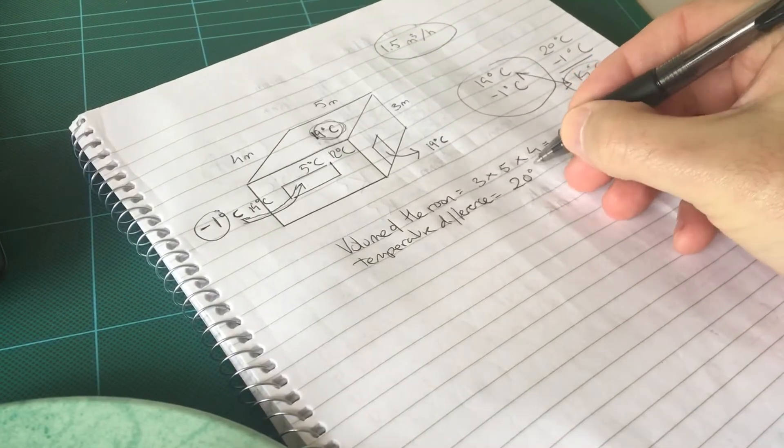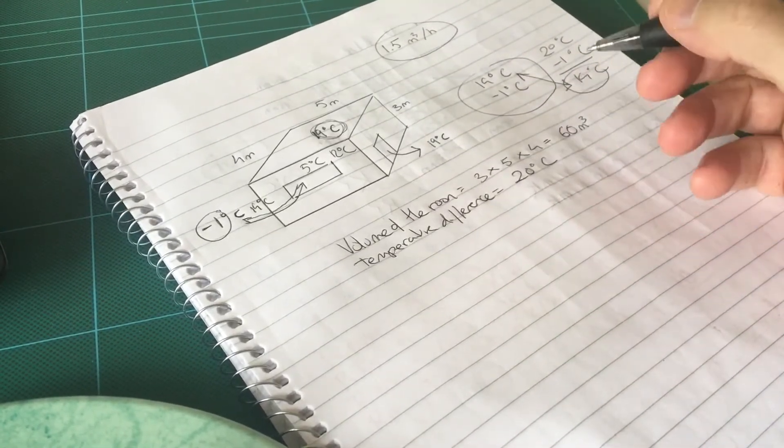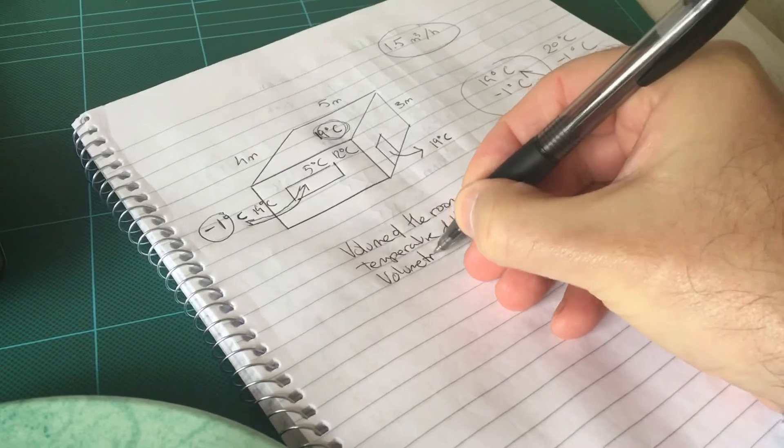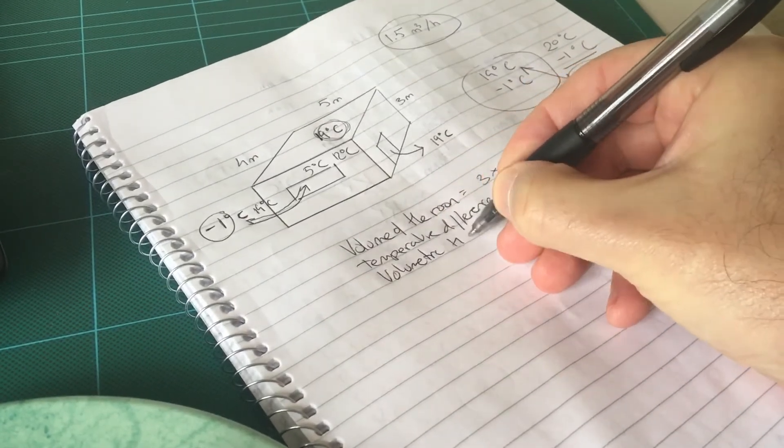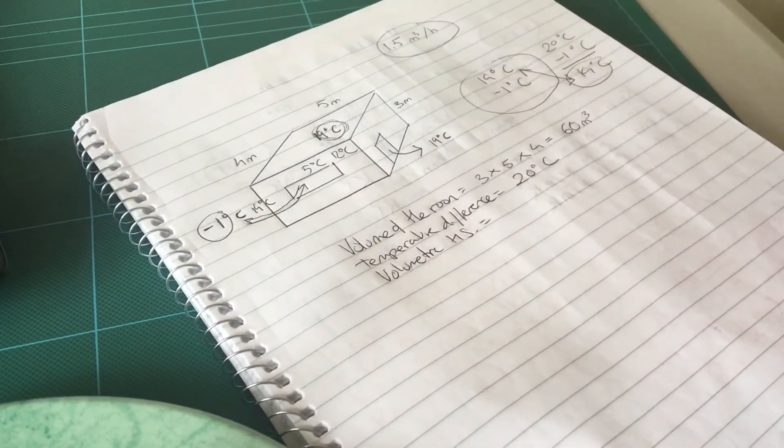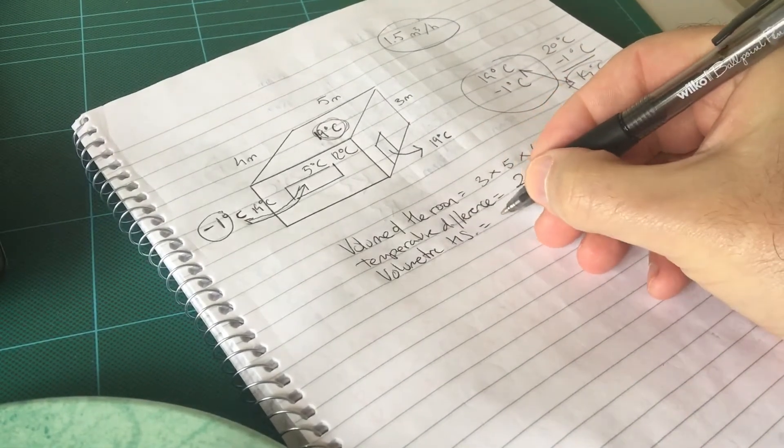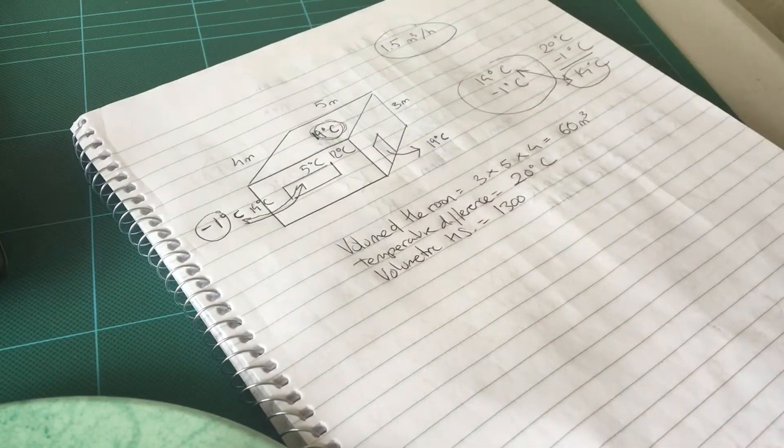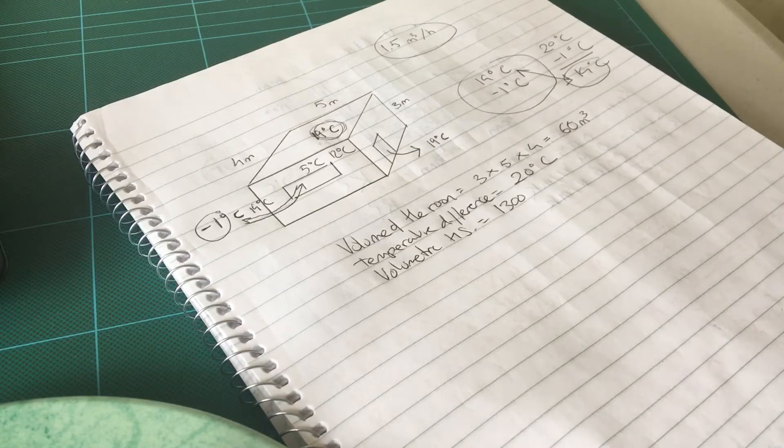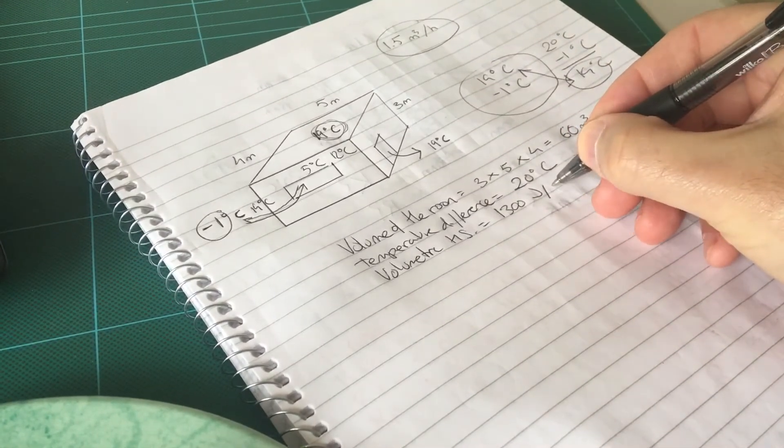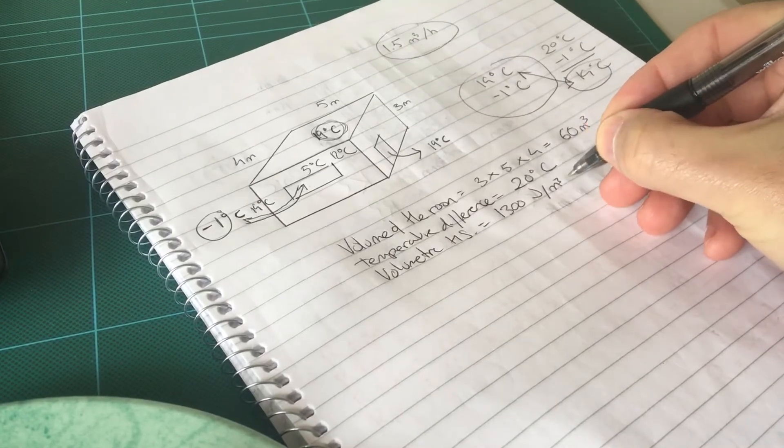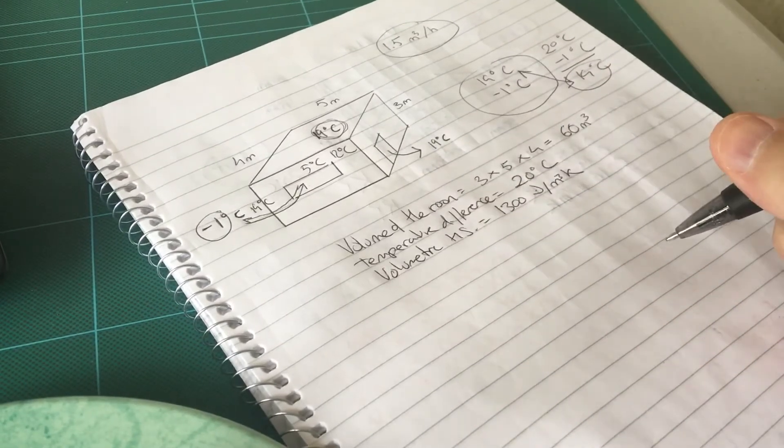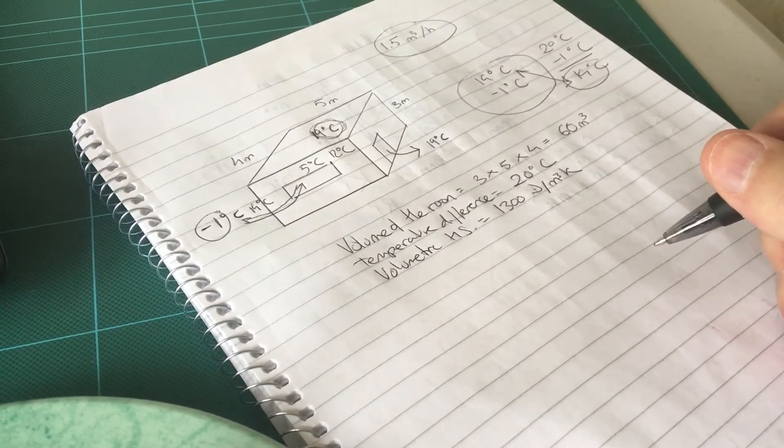So that is the temperature difference and I'm going to write it here and it's 20 degrees. Now you need to know the volumetric heat specifics of the air and the air has the following: 1300 joules per meter cubic kelvin. So that's joules with that I think we are set up to do the exercise.